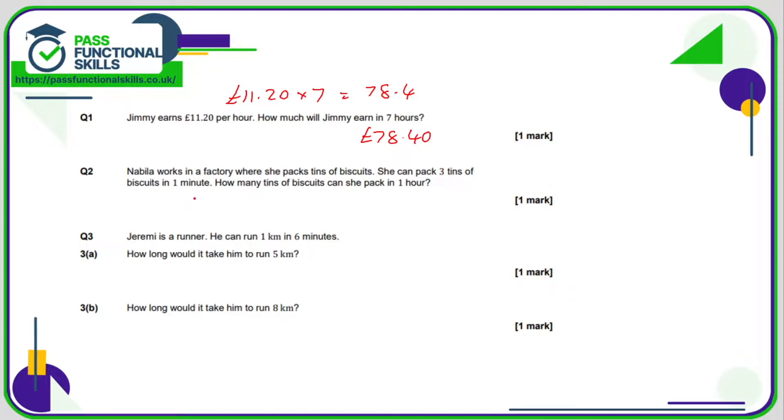Question number 2, no calculator for this one. So if she can pack 3 tins in a minute, how many can she do in 1 hour? Well 1 hour is 60 minutes, so the calculation is 60 times 3. 3 60s are 18, so 6 times 30 is 180.